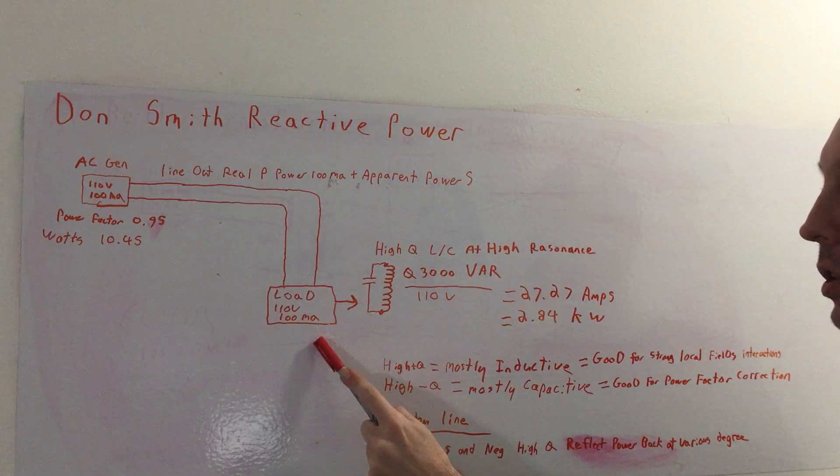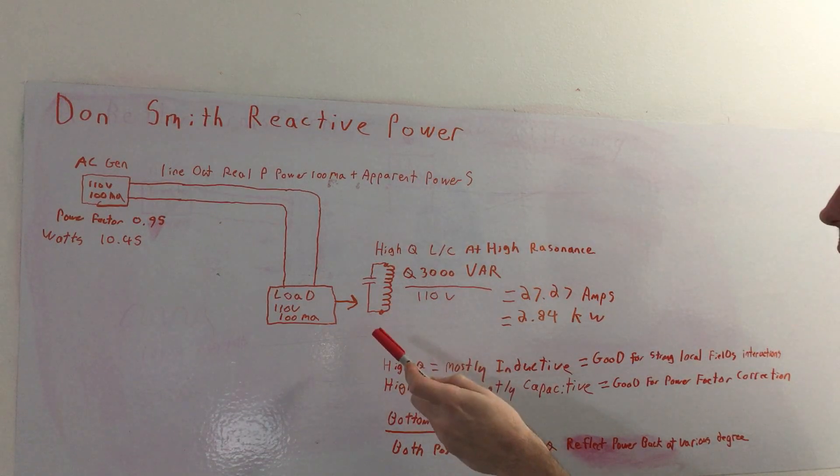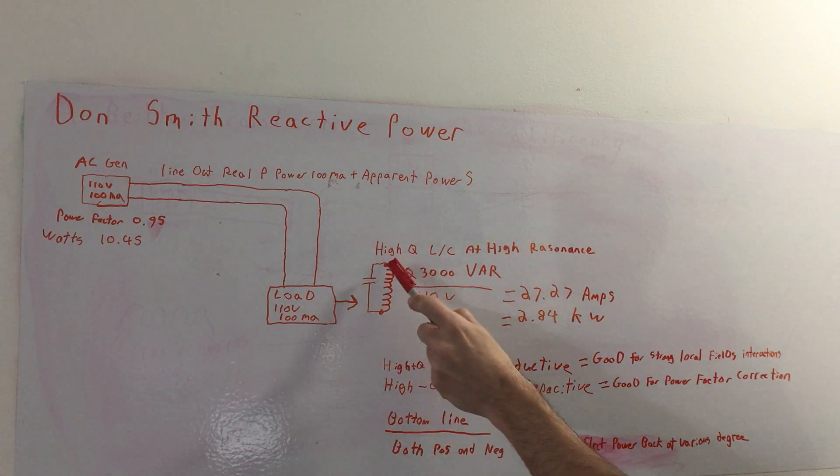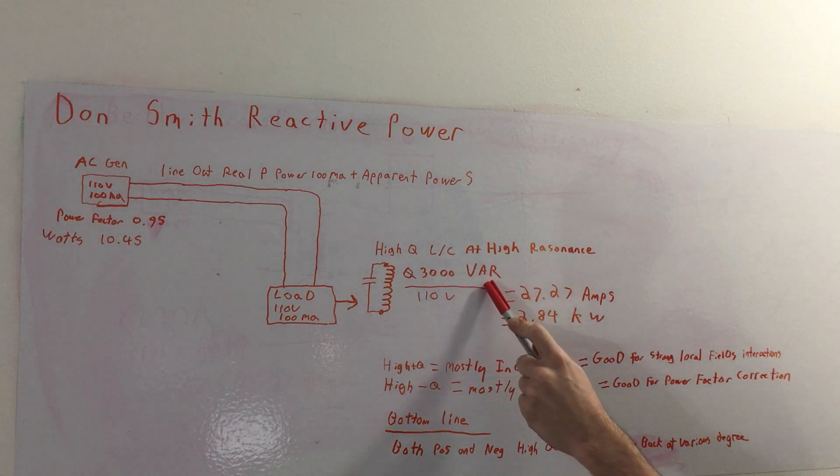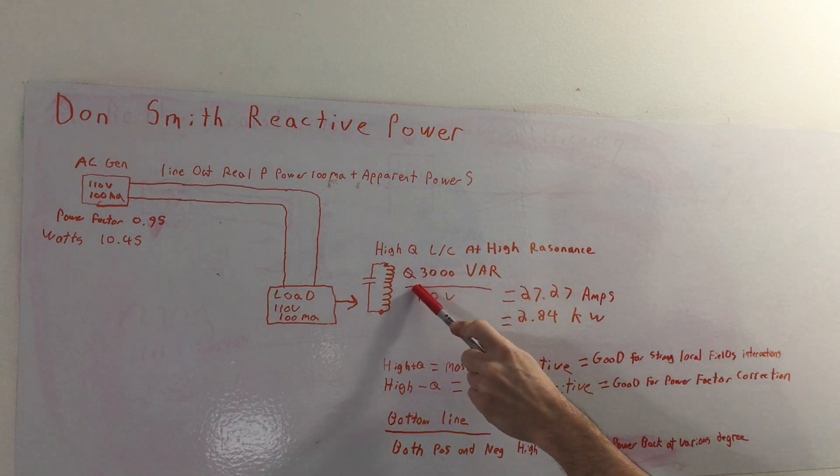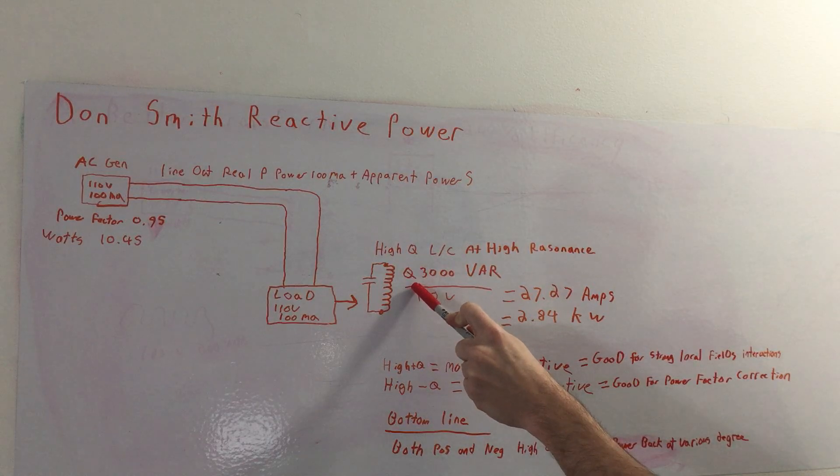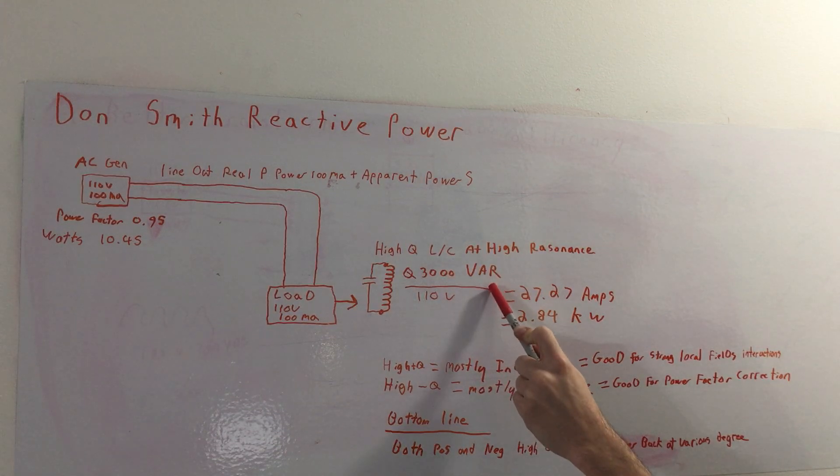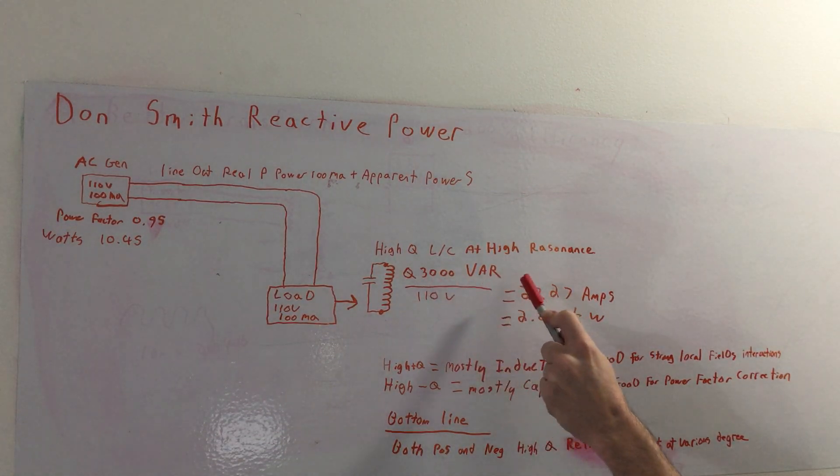So then we have our load which is 110 volts at 100 mA. So essentially in Don Smith and similar setups, we're aiming for a high QLC at high resonance here. So we're aiming for very high VAR power. So just fictionally speaking, what's important here is having a high VAR, and you can do that with resonance with a resonant coil. So let's say here it's 3000 VAR.